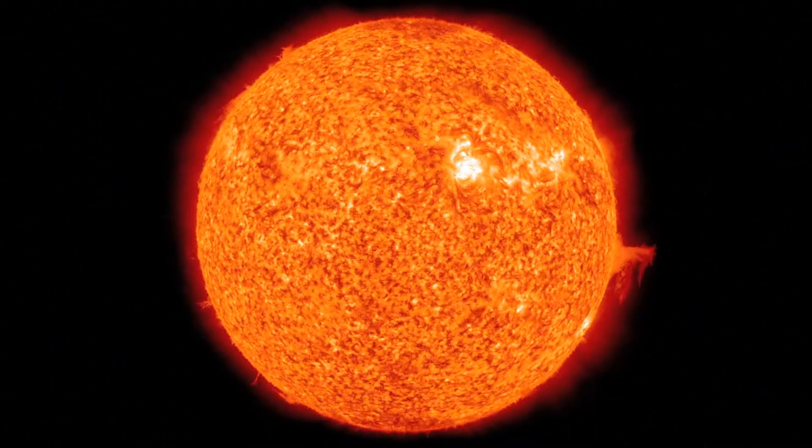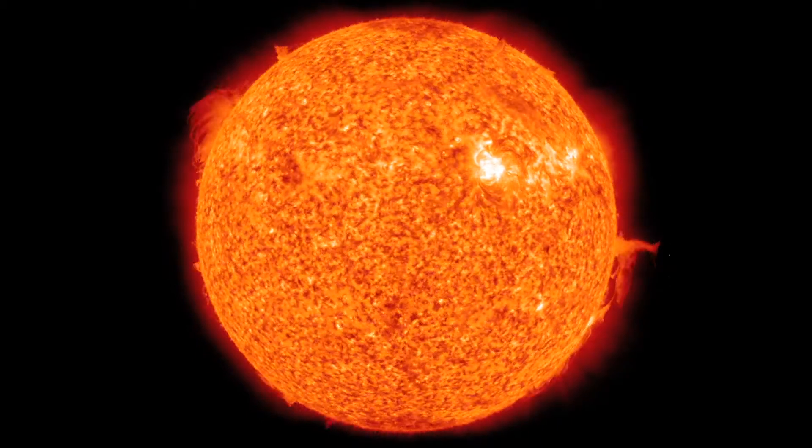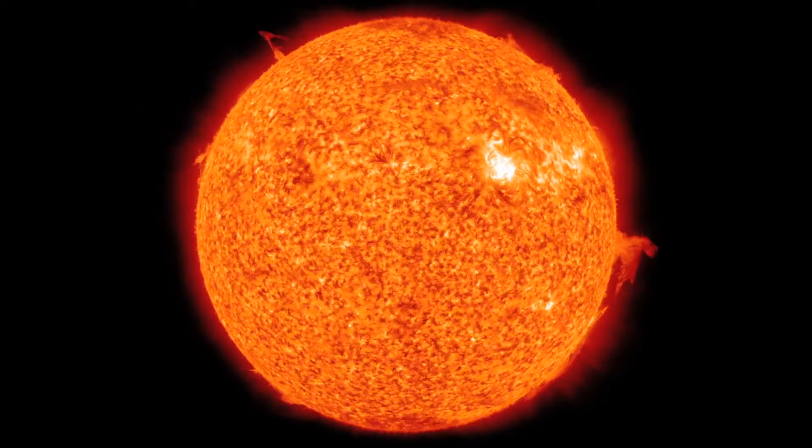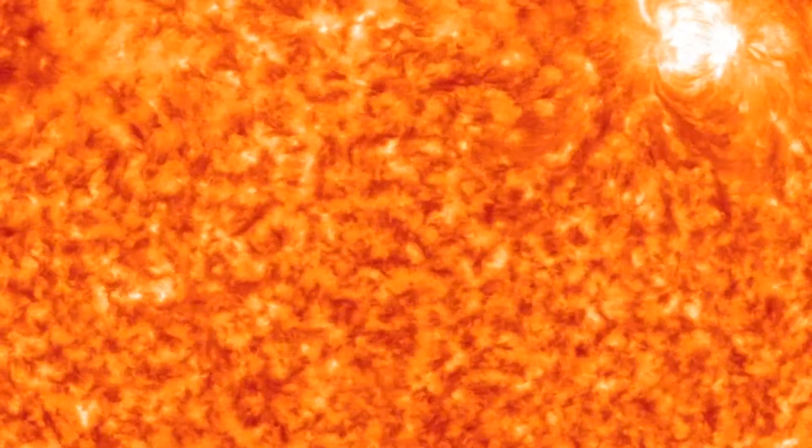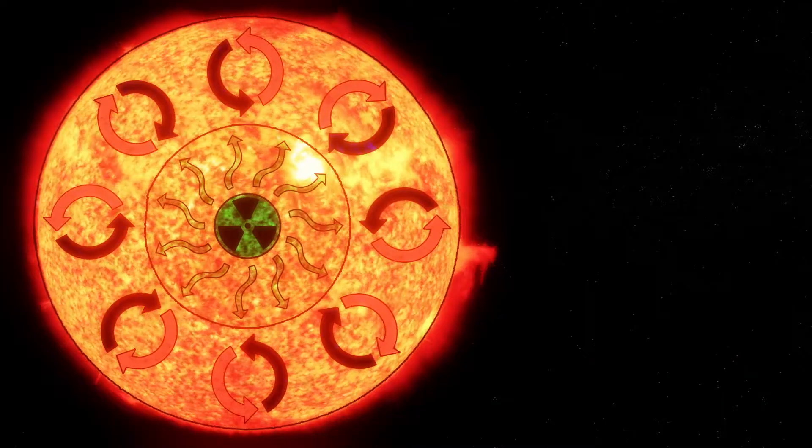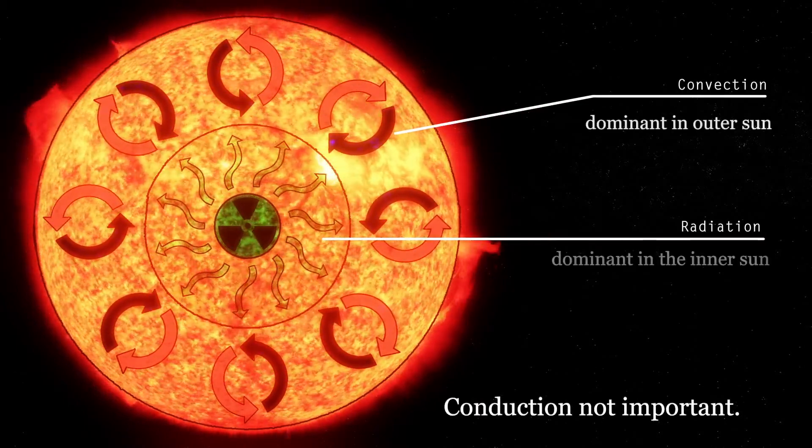Energy is produced in the core of the sun through nuclear reactions. Small nuclei combine to form larger nuclei in nuclear fusion and release energy in the process. That energy then makes its way toward the surface of the sun. There are three major modes of thermal transport: conduction, convection, and radiation.